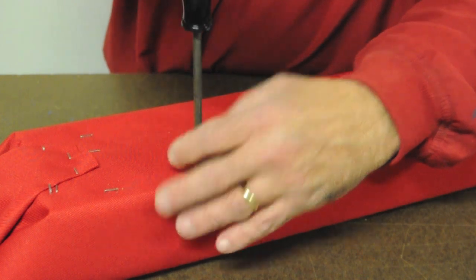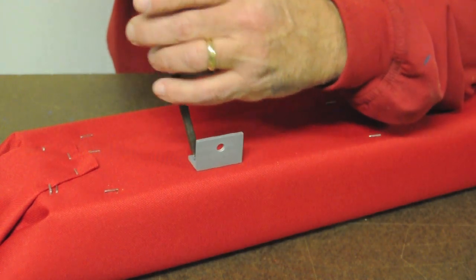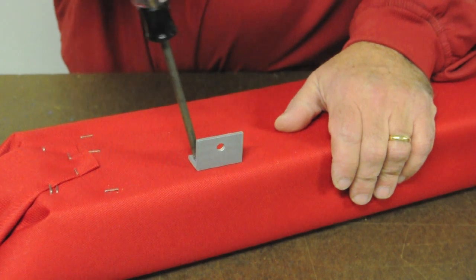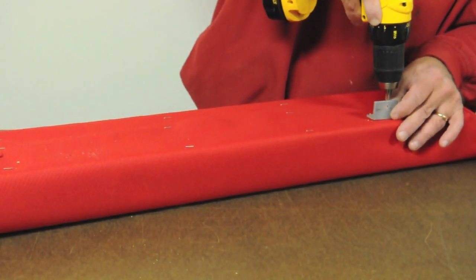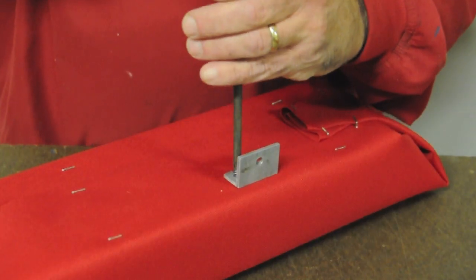Again, since your robot is unique, you will have to make the appropriate measurements to find the correct placement for the brackets. When you have found the correct placement, simply drill some pilot holes and use wood screws to fasten them to the bumper.